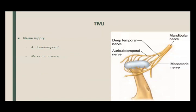The nerve supply — this is important. The nerve supply comes from the auriculotemporal nerve and the masseteric nerve. The masseteric nerve also gives articular branches to the joint.